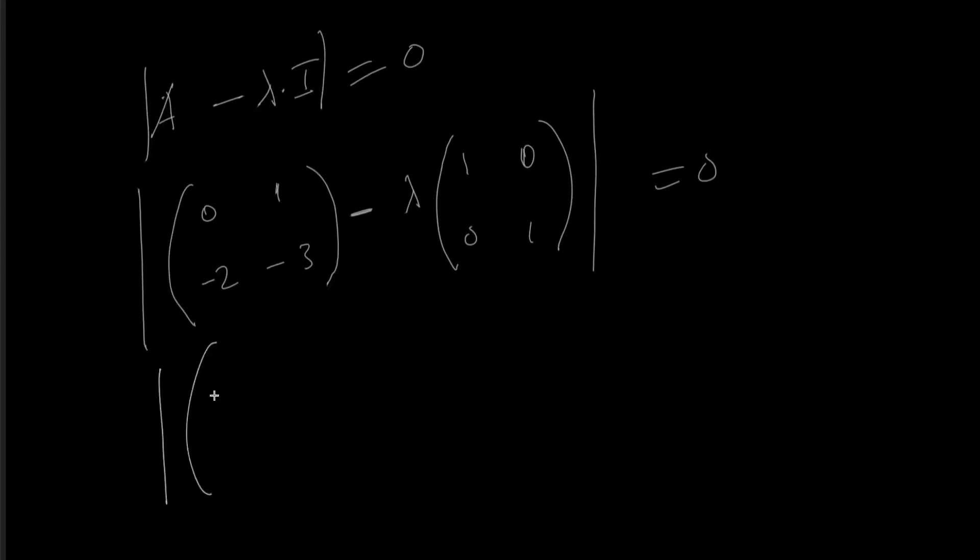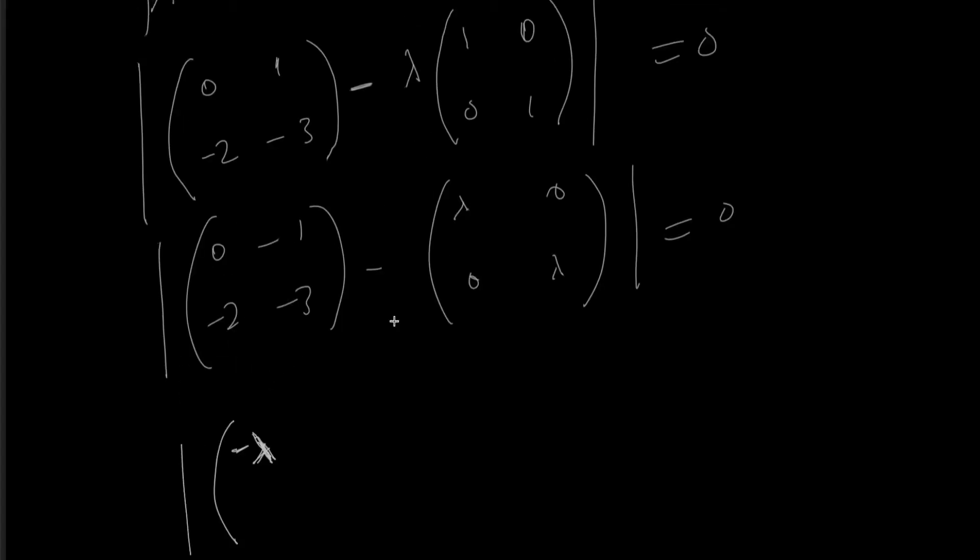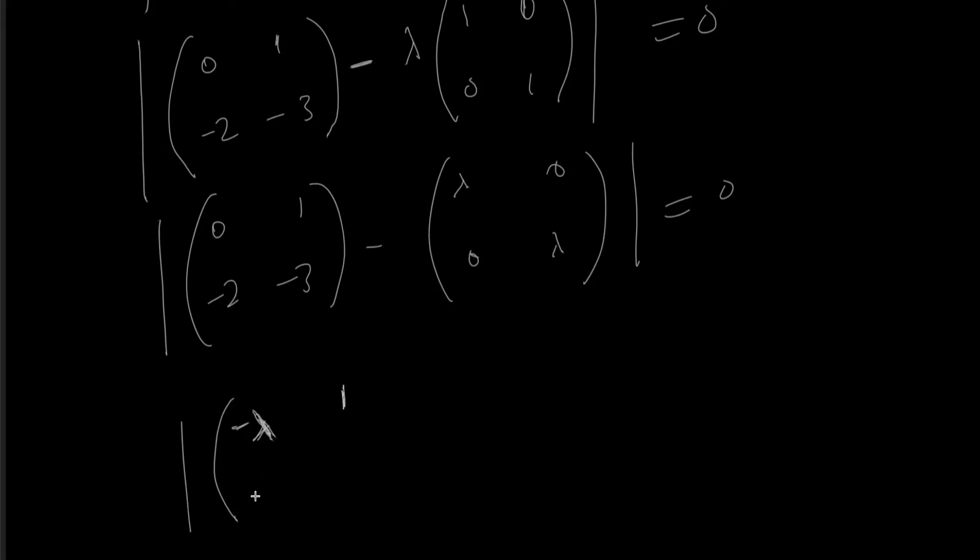Now we need to subtract. This minus this will give us 6 minus λ. I'm making a mistake here, this is supposed to be just 1. So this side is to become 1, and this is -2. This will give us -3 minus λ equals zero.